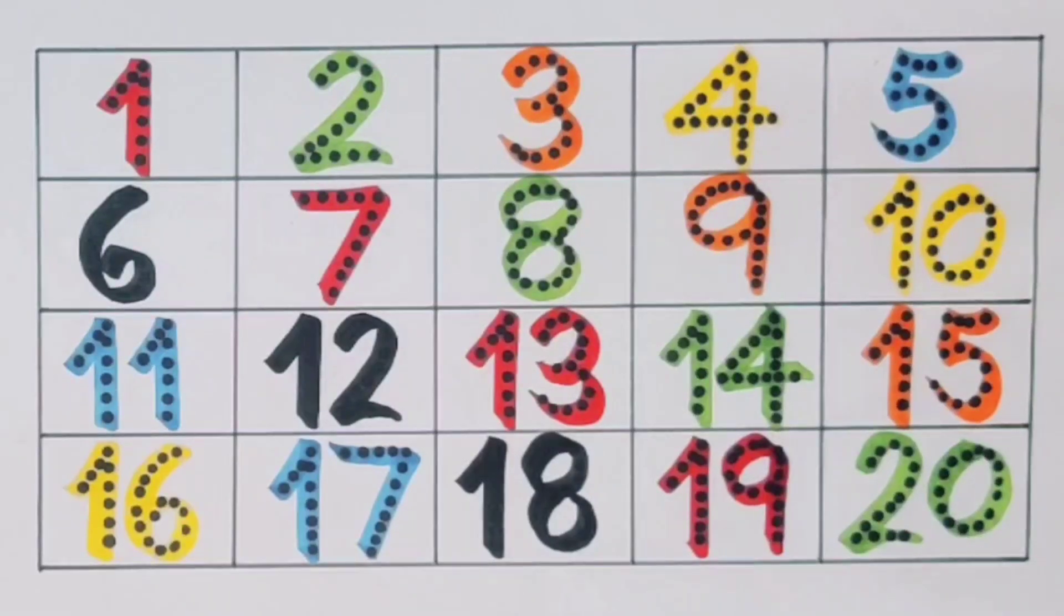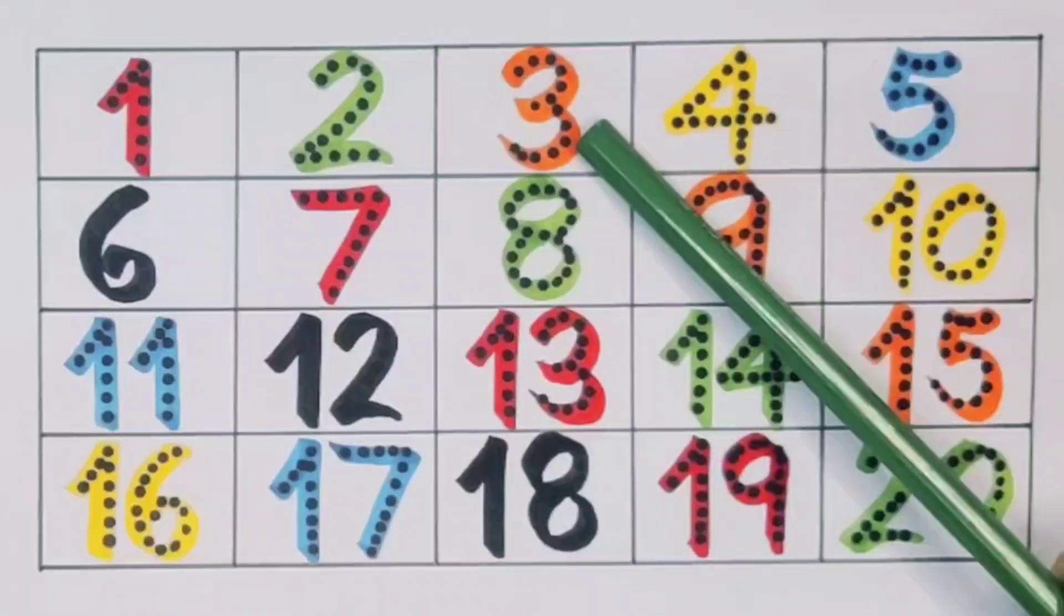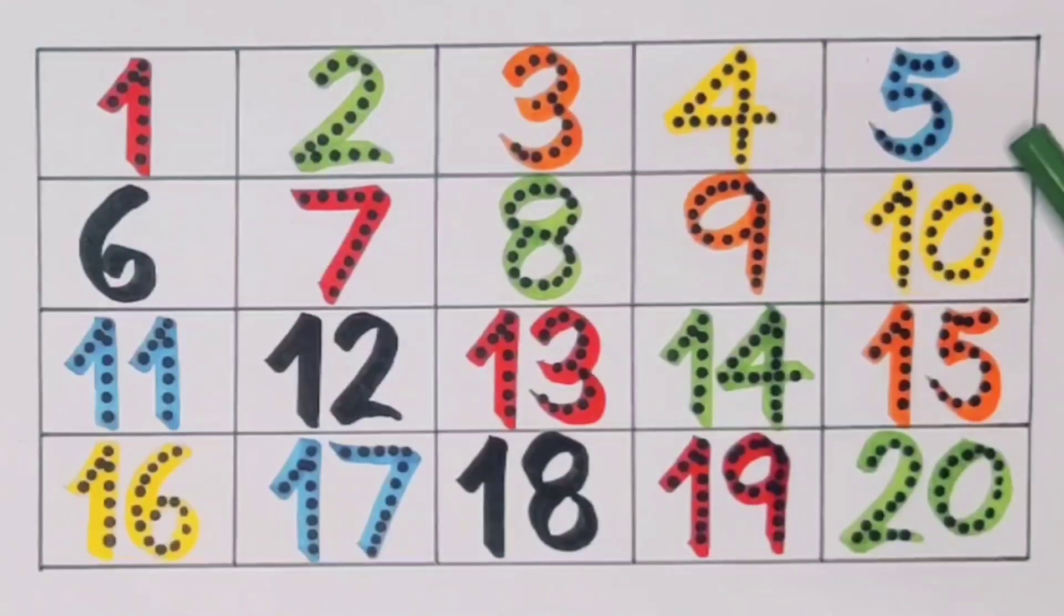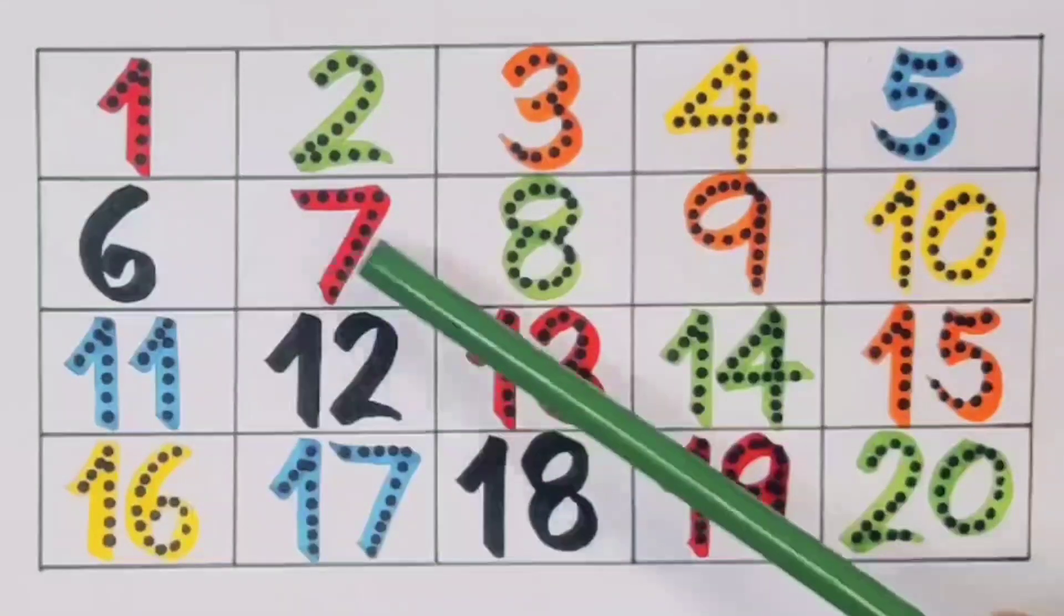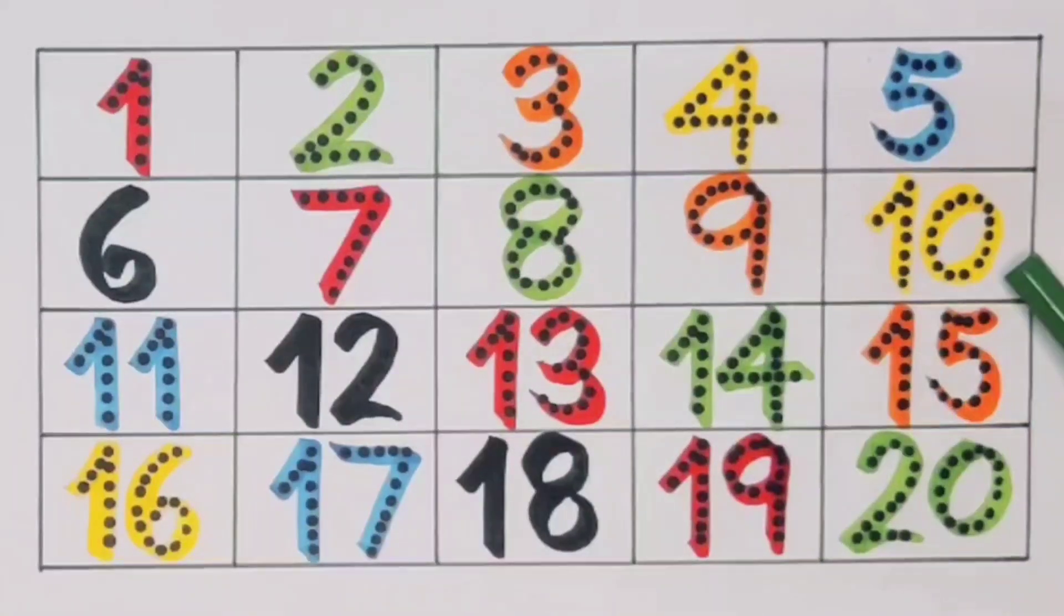Next kids, nineteen, one nine, nineteen, number nineteen. Next kids, twenty, two zero, twenty, number twenty.